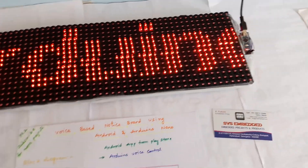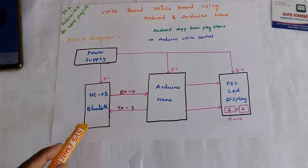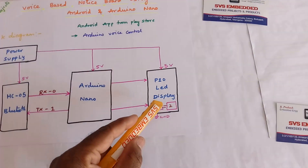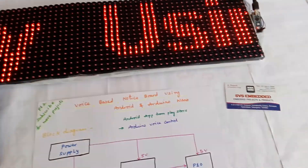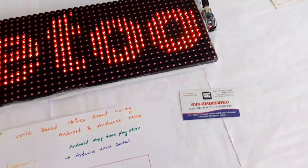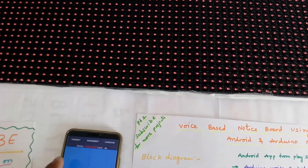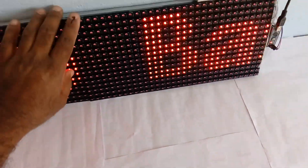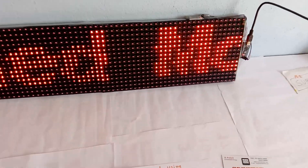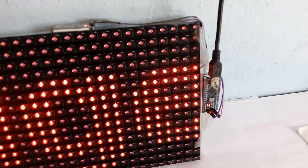We are scrolling the data on the display. We are using Arduino Nano, HC05 Bluetooth module, and a P10 LED display board with two patches, and a 5-volt power supply module.